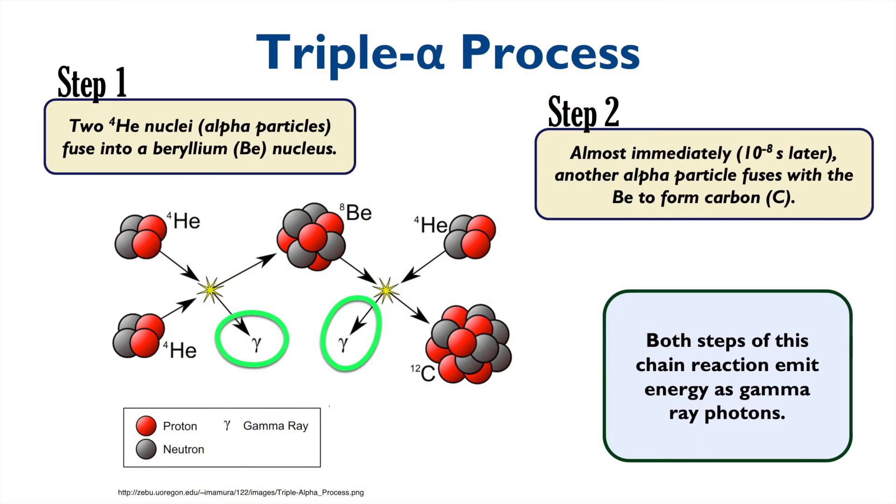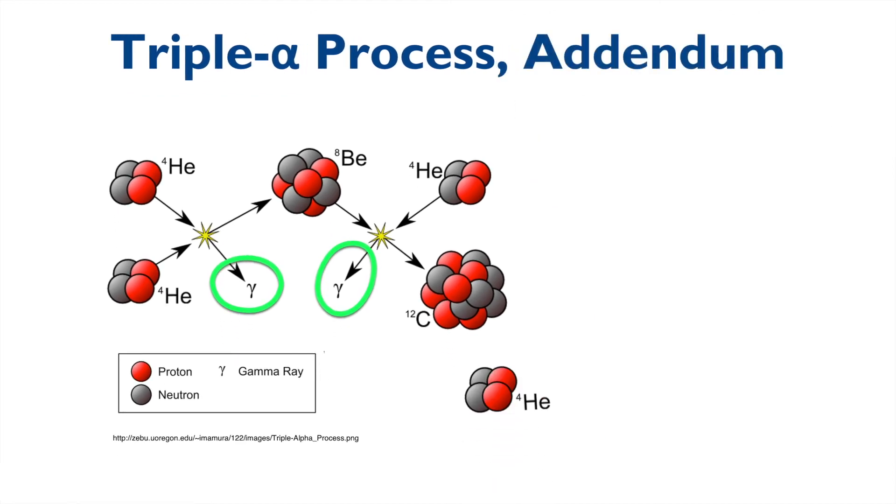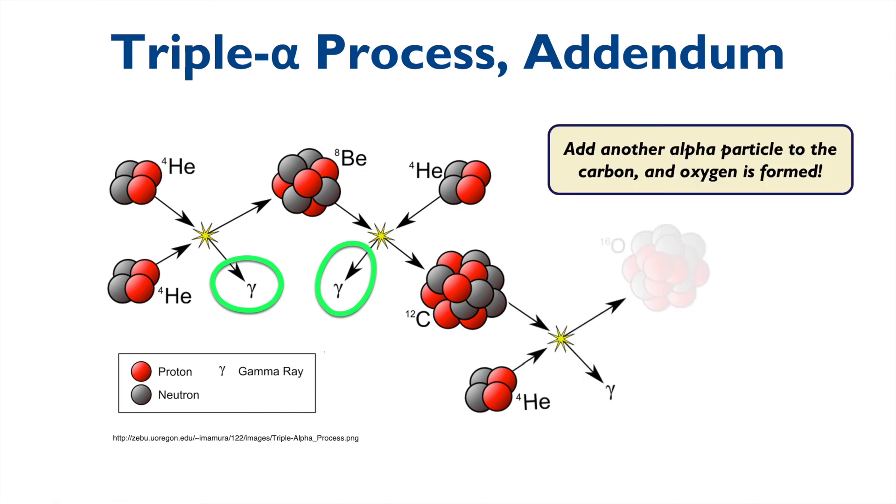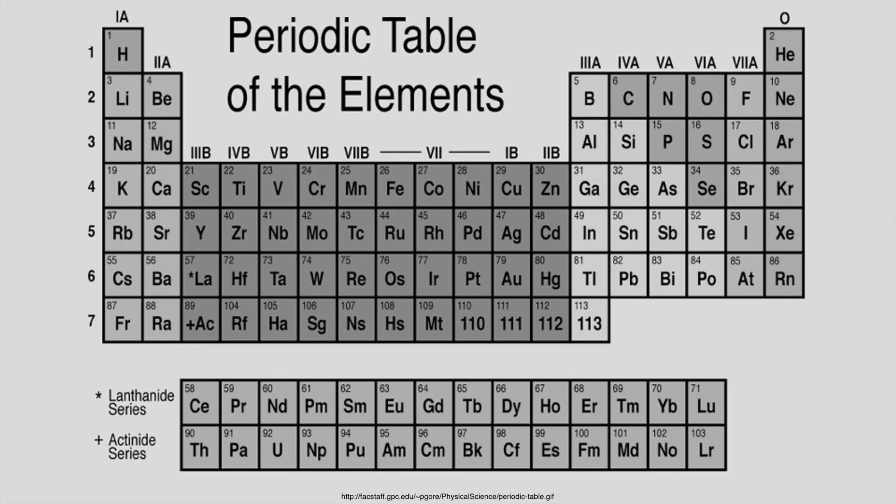Now let's briefly go back to the triple alpha process. What happens if we just bring in another alpha particle into the equation and combine it with the carbon that was initially produced from the first round? Well, fusing that carbon with the new alpha particle results in the formation of a new element, oxygen. And this step also emits yet another gamma-ray photon. And with that, we can now account for the formation of at least four, if not five, of the elements on the periodic table.